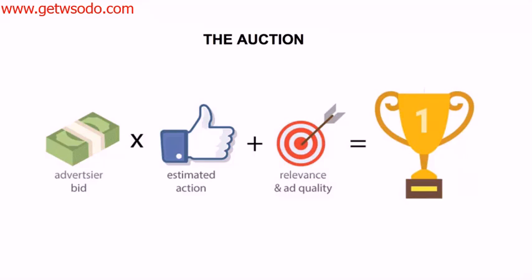It's great for advertisers, and it's important to understand how to create great, relevant, high-quality ads. Your bid, estimated action, and relevance and ad quality combined determine whether you win the auction. You're competing against oftentimes millions of other advertisers for a particular audience. These metrics determine whether you go after a high-quality, high-intent audience — what we call an A-class audience — or a B or C-class audience, which is lower intent and lower quality, usually because your bid and ad relevancy aren't up to par.